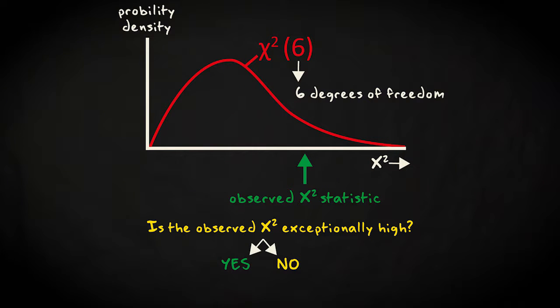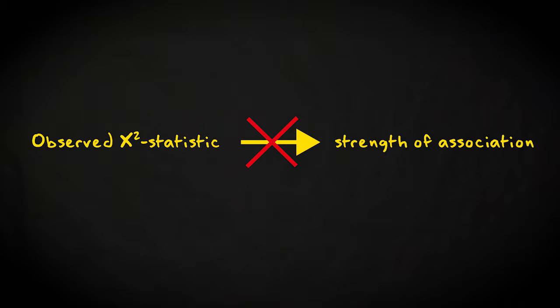If that's the case, you find the null hypothesis of independence so unlikely that you reject it. Without correcting for the number of cells, the size of the chi-squared statistic can however not be interpreted by itself and doesn't tell anything about the effect size, that is the strength of the association.